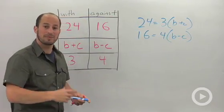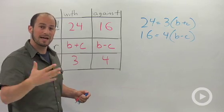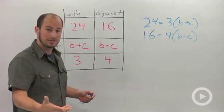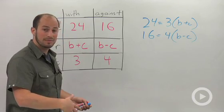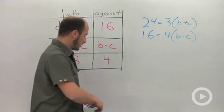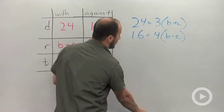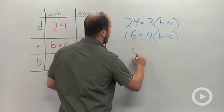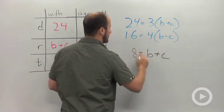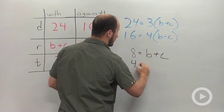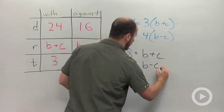To make my life a little bit easier, I see that both of these equations can be divided by a number to make our numbers smaller. Our top equation we can divide by 3, our bottom equation we can divide by 4. So dividing that out, we end up with 8 equals B plus C, and dividing by 4 gives us 4 equals B minus C.